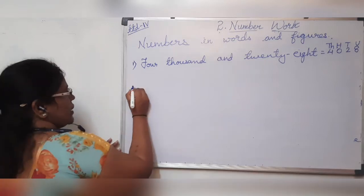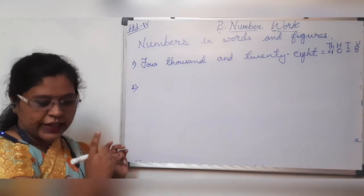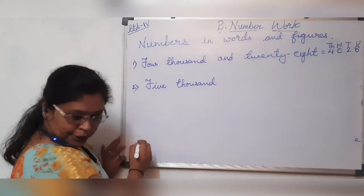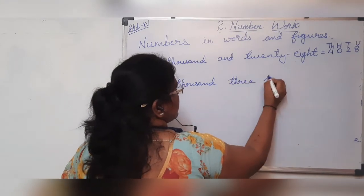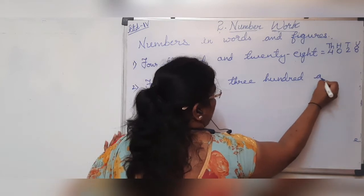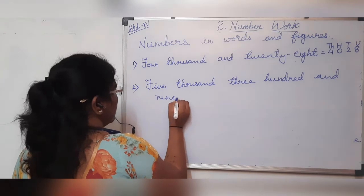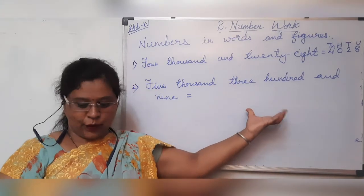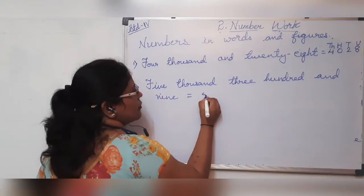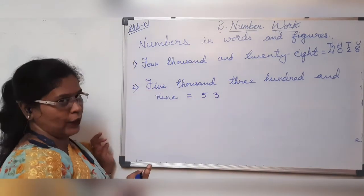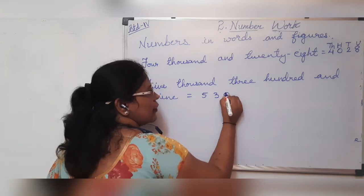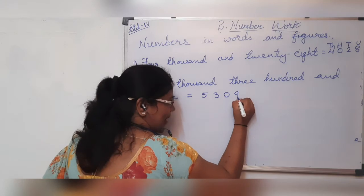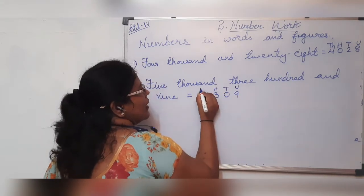The second example in the textbook is 5,309 — five thousand three hundred and nine. Here tens place is not given, so simply write 5,300 and then there is no tens value. When there is no tens value, you have to put 0, and the units place is 9. So the number is 5,309 — units, tens, hundreds, and thousands.